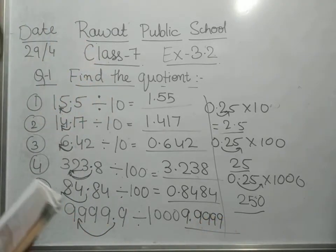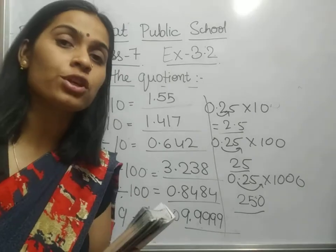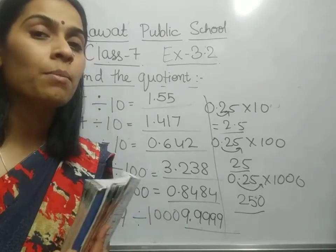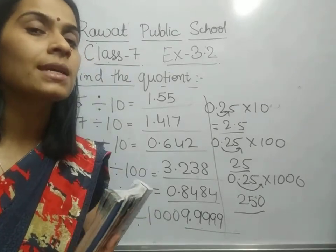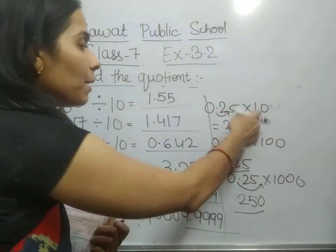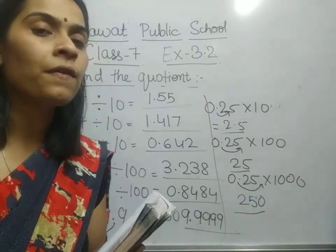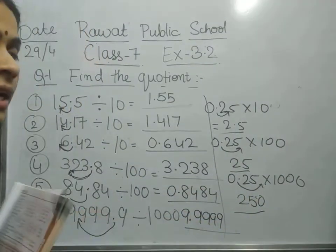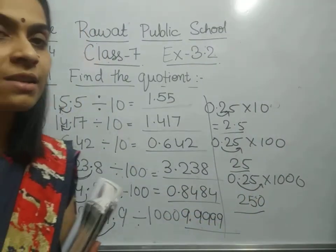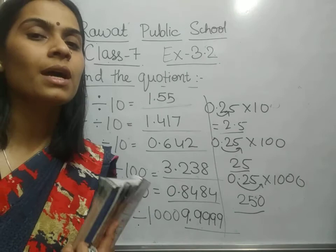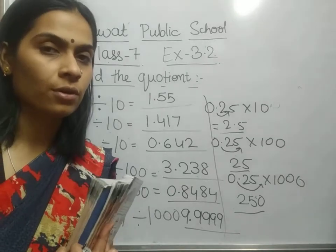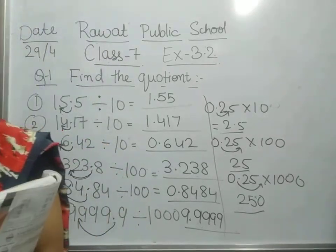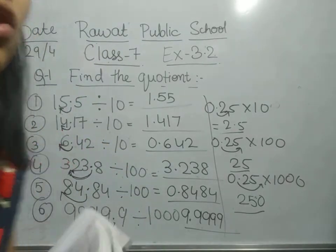In case of multiplication, the decimal will shift to the right by the number of digits we are multiplying by, and if we are dividing, the decimal will shift to the left. Hopefully you have understood the concept. Let's move on to the next question.